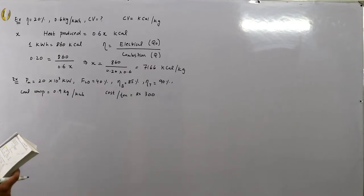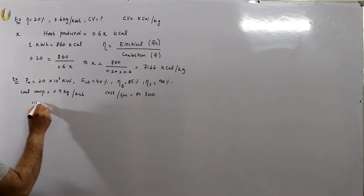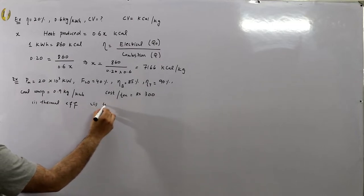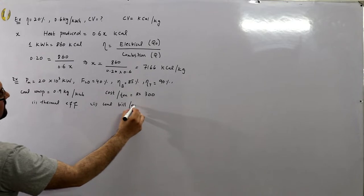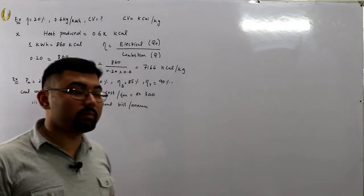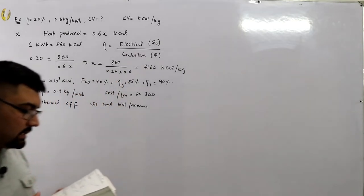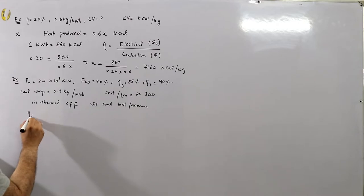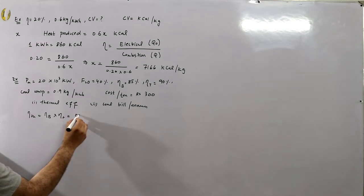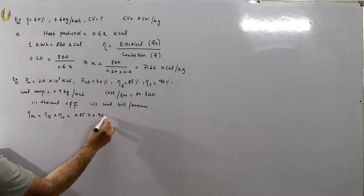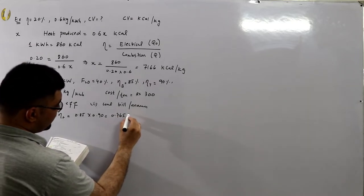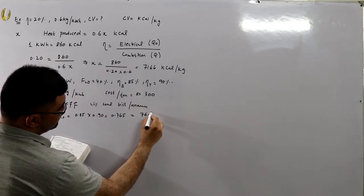We need to determine the thermal efficiency and the coal bill per annum. For the thermal efficiency, the thermal cycle includes the boiler and the turbine, so: eta_thermal = eta_boiler × eta_turbine = 0.85 × 0.90 = 0.765, which is 76.5%.